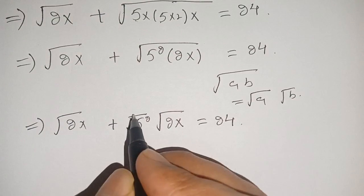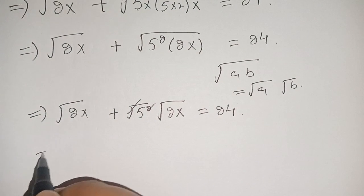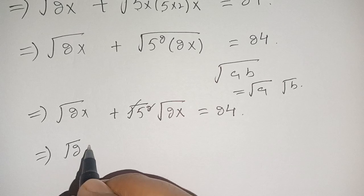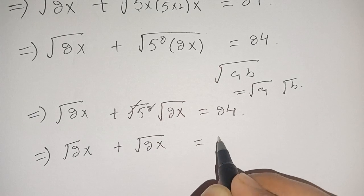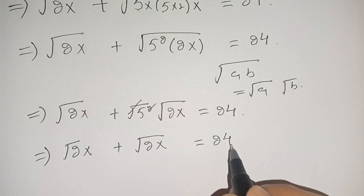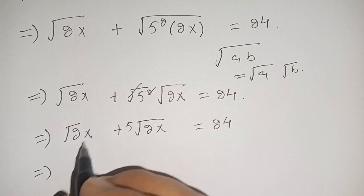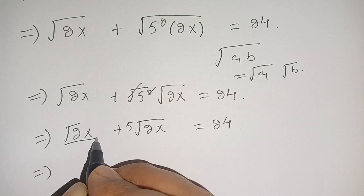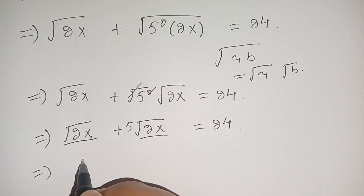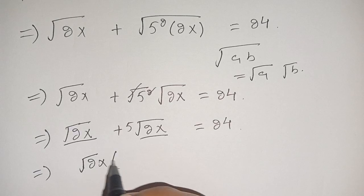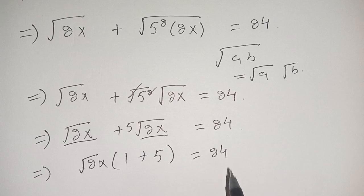Now we can cancel the square with the square root. The remaining part is square root of 2x plus 5 times square root of 2x is equal to 24. Now we take out square root of 2x as a common factor, and we get square root of 2x times the quantity 1 plus 5 is equal to 24.